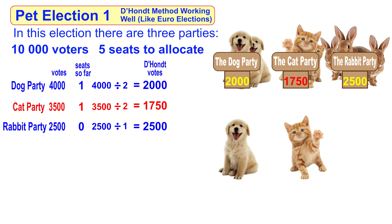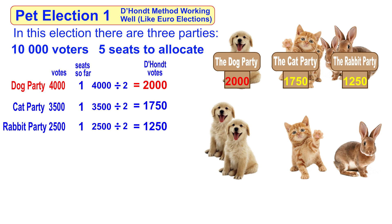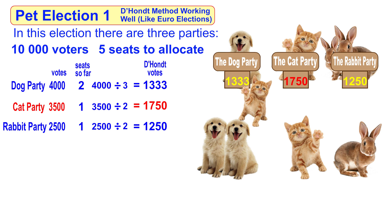Now the rabbit party has the highest vote, so a rabbit is elected. One seat plus one gives you 2, so dividing 2,000 by two gives 1,250. Now the dog party is back in the lead, so another dog is elected. The dog now has two seats — two plus one gives you three — so dividing by three gives 1,333. Looking again, a cat gets the last seat elected.